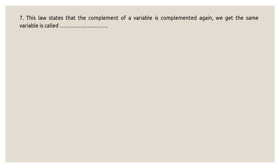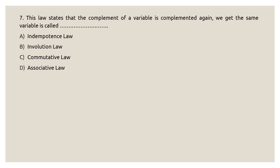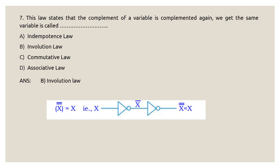Next question: which law states that if the complement of a variable is complemented again, we get the same variable? Options are: A) Idempotent Law, B) Involution Law, C) Commutative Law, D) Associative Law. The correct answer is option B, Involution Law. For example, X double bar equals X. The variable X is complemented using a NOT gate to get X̄, then complemented again to get X̄̄ = X.